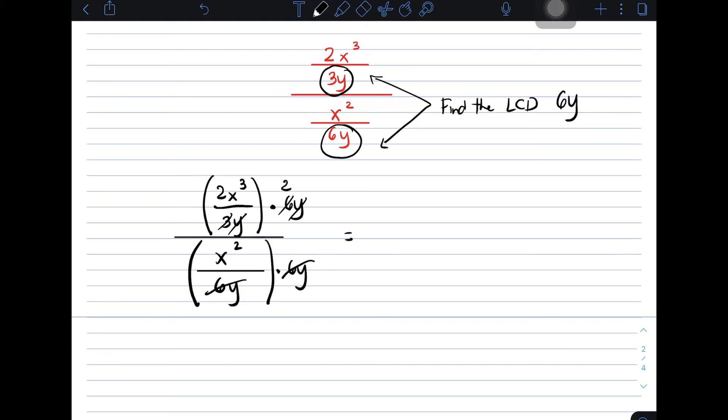Multiply and simplify. That will give you 4x cubed. Right? All over x squared.